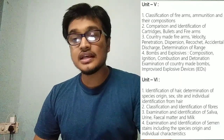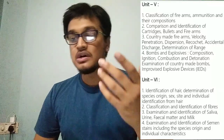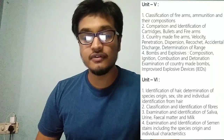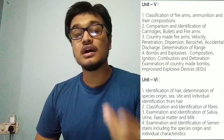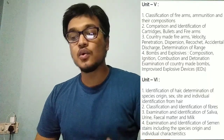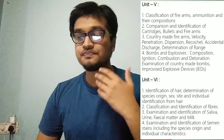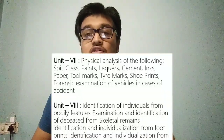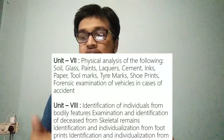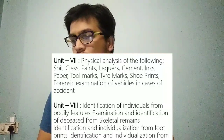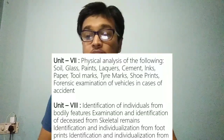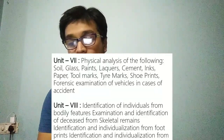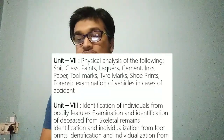Unit 6 covers identification of hair, determination of species origin, identification of fibers, saliva, urine, faecal matter, and milk. Unit 7 is about physical analysis of soil, grass, lacquers, cement, inks, paper, and tool marks.